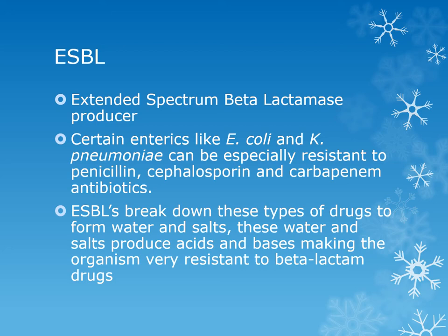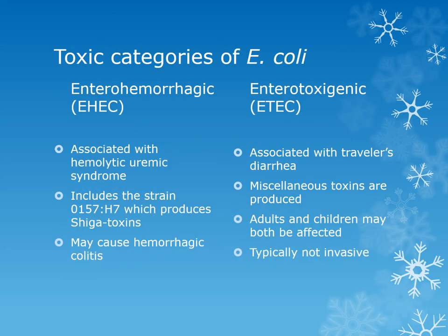The ESBLs break down beta-lactam drugs — penicillins, ampicillins, and cephalosporins — to form water and salts, producing acids and bases, making these organisms very resistant. There are actually four categories of toxin-producing E. coli, but the two most common are enterohemorrhagic E. coli, known as EHEC, and enterotoxogenic E. coli, known as ETEC. These are toxic strains of E. coli that have been known to occur in hospitals, daycare centers, nurseries, and contaminated food. In fact, there was a nationwide outbreak of EHEC on romaine lettuce in January of 2017.